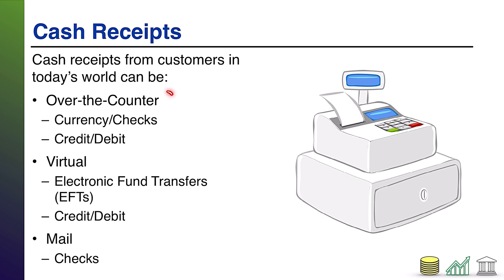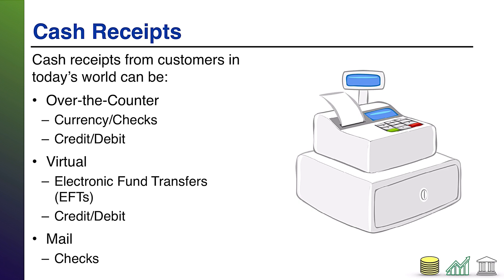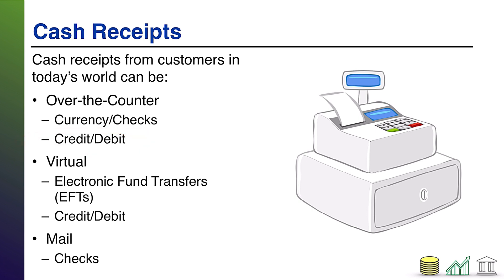Whenever there is over-the-counter business, the ways a customer could pay is literally by currency — paper dollar bills and metal coins — or with checks. Checks aren't really common for retail customers anymore, but it's still a common method when businesses pay each other. Over-the-counter could also be by swiping a credit card or a debit card. So all of these methods are a way that people can pay for something.